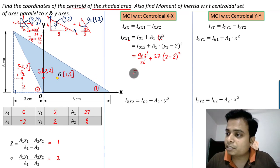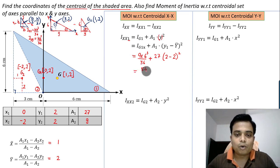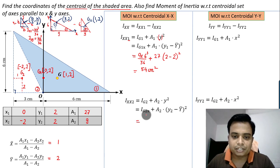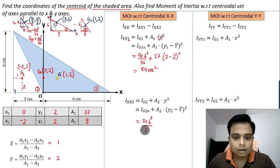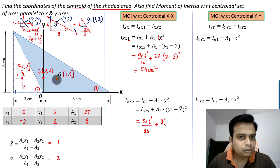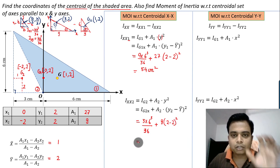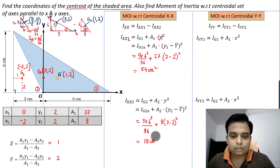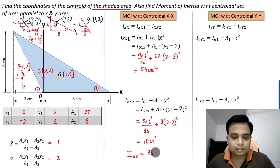The final value for Ig1x works out to 54 centimeter to the fourth. For geometry two, it's three times six cubed over 36, plus area nine times (y2 minus y-bar)² which is (2 minus 2)² — again zero. That gives 18 centimeter to the fourth. So the final Ixx equals 54 minus 18, which gives 36 centimeter to the fourth.